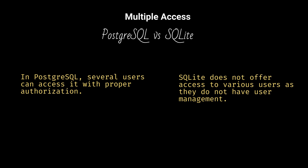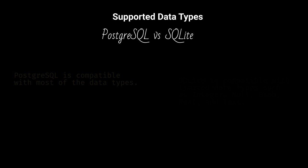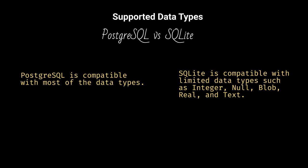In PostgreSQL, several users can access it with proper authorization. SQLite does not offer access to various users as it does not have user management. PostgreSQL does not have in-memory capabilities, while SQLite does have in-memory capabilities. PostgreSQL is compatible with most data types, while SQLite is compatible with limited data types such as integer, null, blob, real, and text.